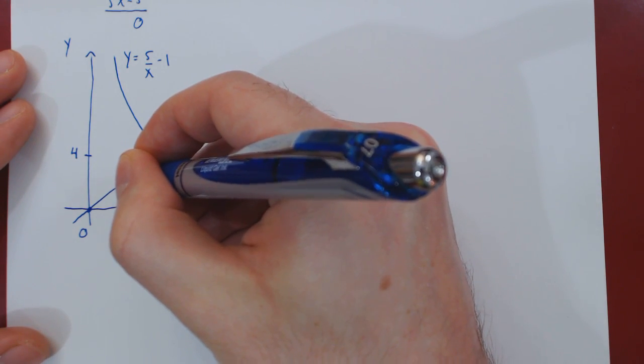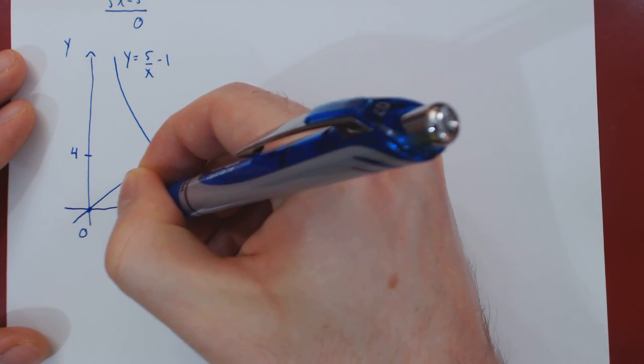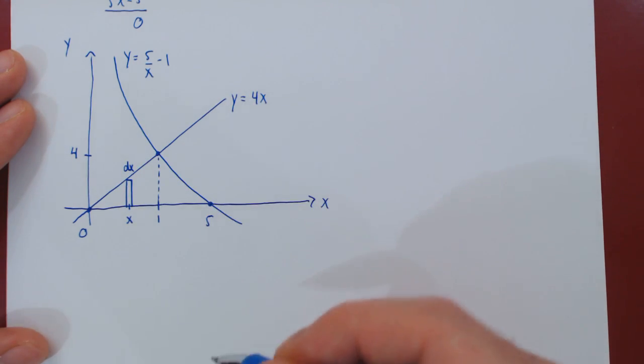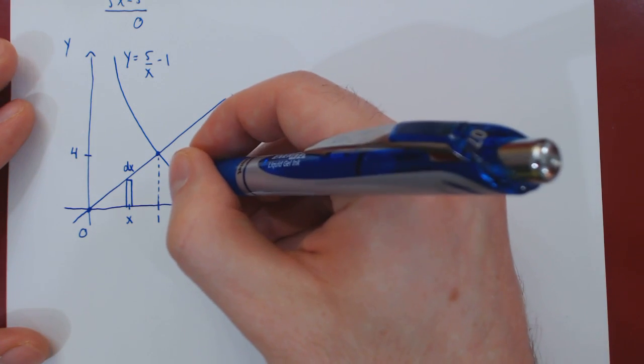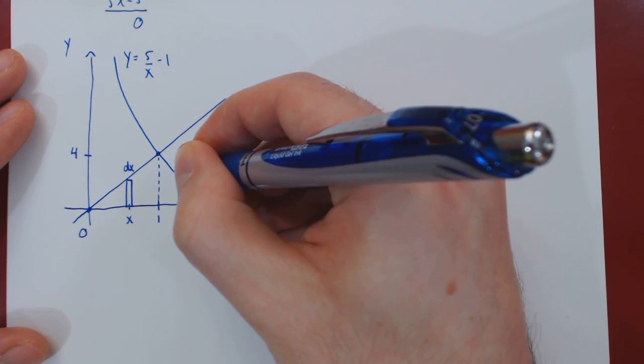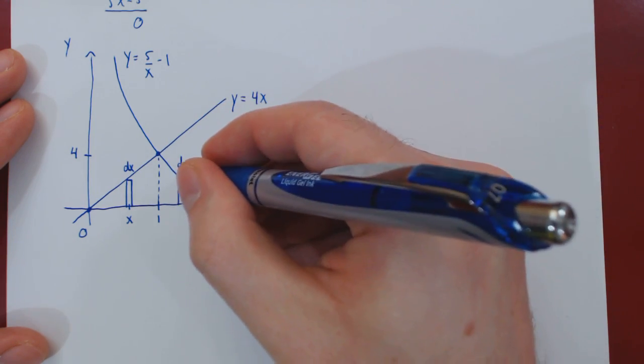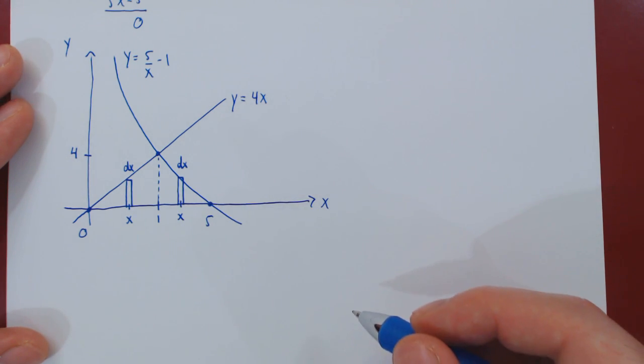As you go from 0 to 1, if you draw a generic rectangle, the position is an arbitrary x value. The width of the rectangle is dx. If you draw another generic rectangle between 1 and 5, again, its width is dx, an infinitesimal change along the x-axis, and its position also is an arbitrary x value.